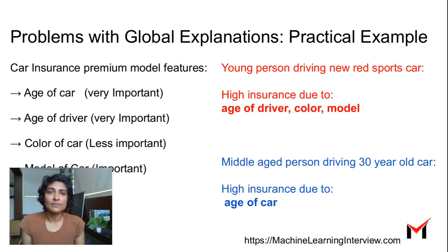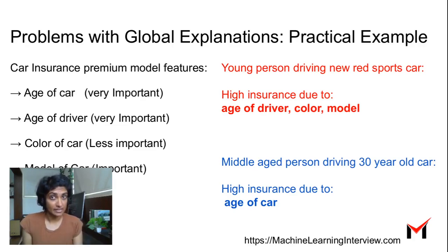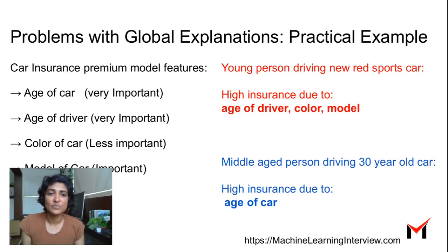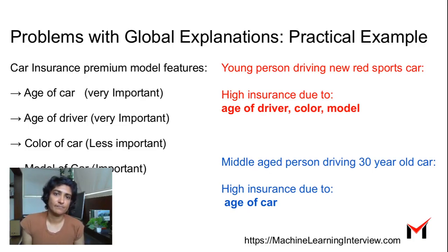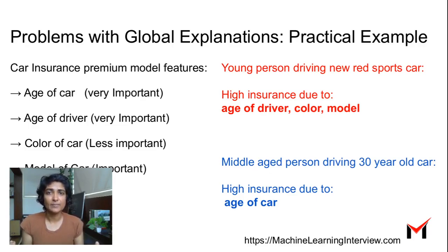But suppose a young person is driving a red sports car. The reason the insurance would be high in this specific case would be because of the age of the driver, the color, and the model of the car. On the contrary, if a middle-aged person is driving a 30-year-old car, then the high insurance is probably because of the age of the car. So the explanation could be different depending on the specific data point, and a global model cannot provide these specific explanations for individual data points.